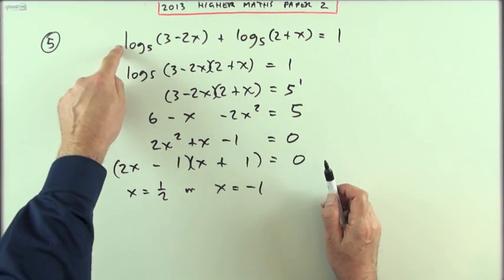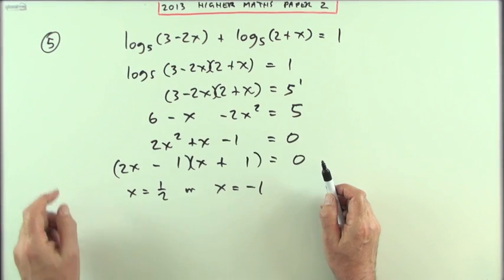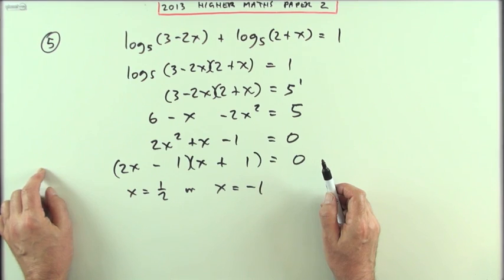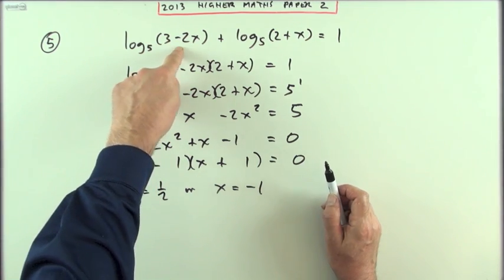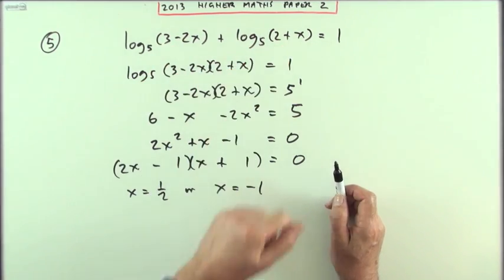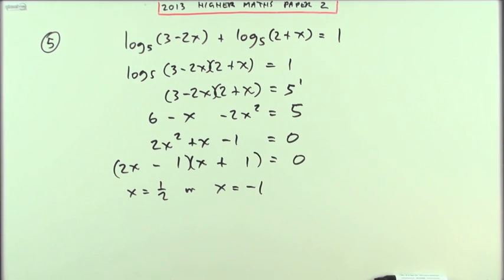Just check of course that you haven't violated the rules of these logs, which is you can't get the log of a negative number or zero. So putting a half into both of them was fine. Putting negative 1 into both of them, well that gives a positive, positive, and that's still positive. So they're both good answers.